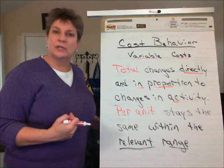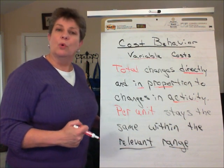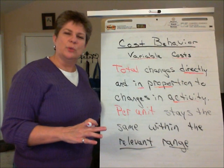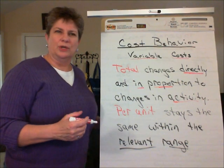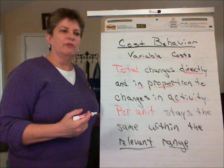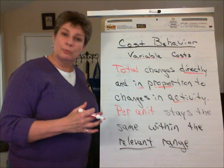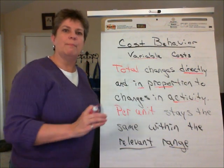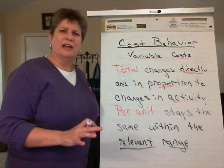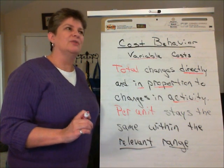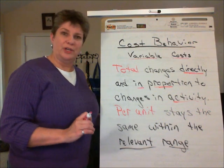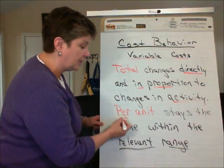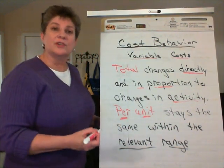For example, direct materials. The more units we produce, the more the total cost of direct materials will be. In order to be able to predict, we also need to make some assumptions about how that cost behaves. For example, we assume that within a certain period of time or over a certain level of production, the cost will behave in a linear manner. Another thing that needs to be true in order for us to predict the total cost of a variable cost is that the per unit cost of a variable cost, such as direct material,